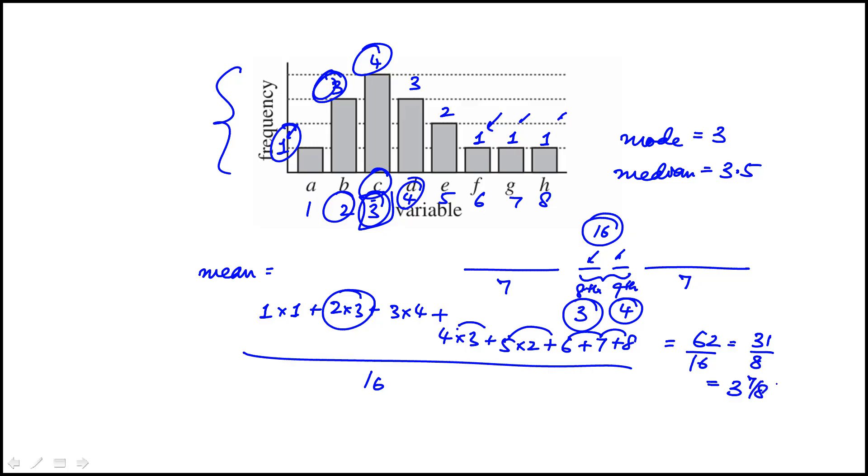So the mean is 3 7/8. We notice that the mean is the greatest, then the median, then the mode is the least. Looking at the answer choices, mode is less than the median, which is true, and the median is less than the mean. So that works—answer is choice A.